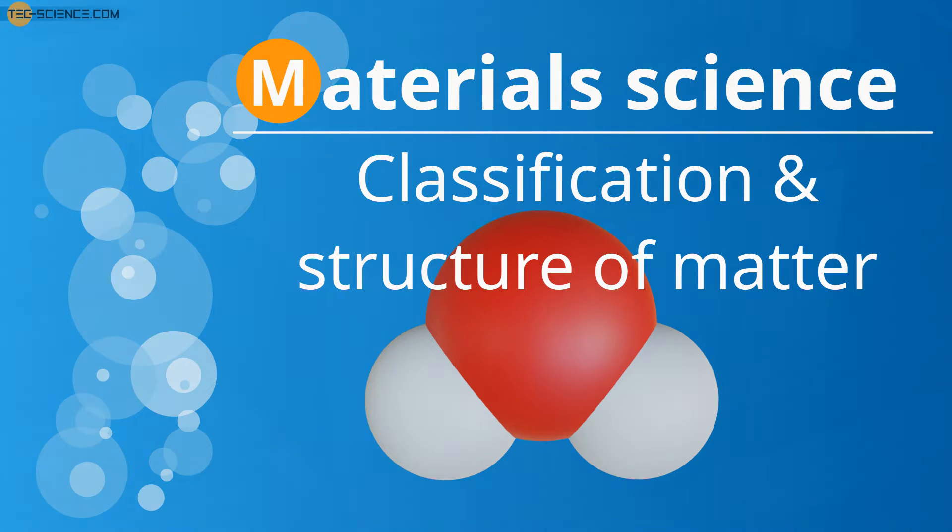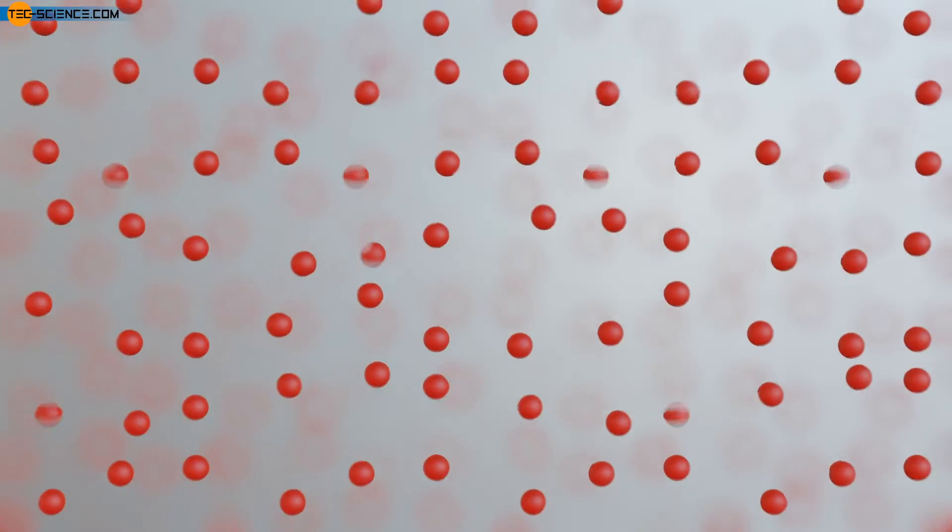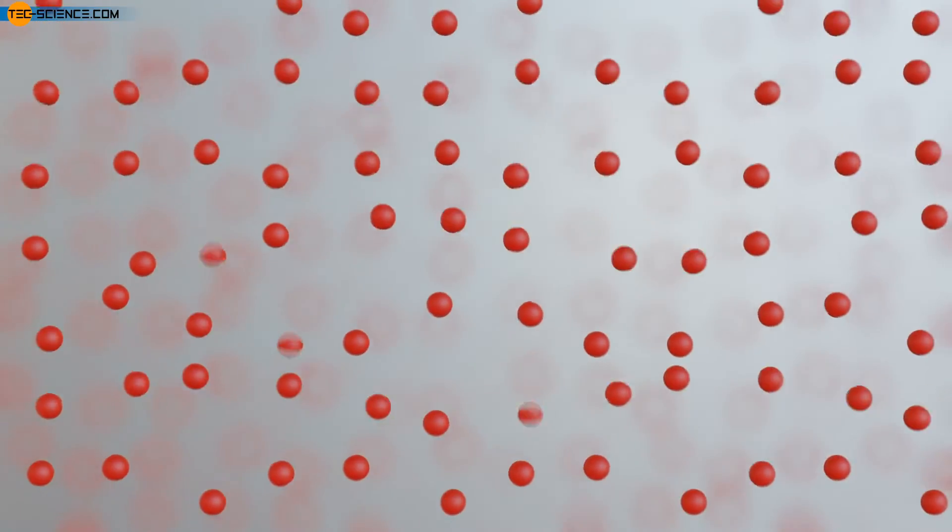Classification and Structure of Matter. Matter is made up of microscopic units called atoms. Chemical elements are composed of atoms of a certain type.